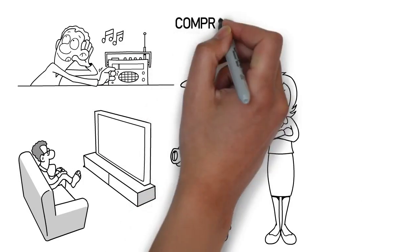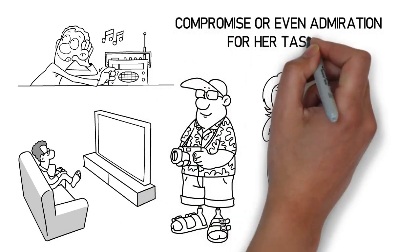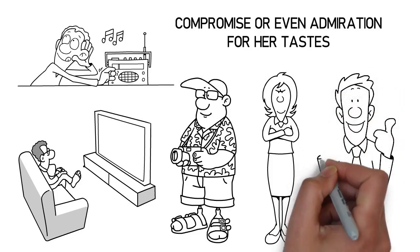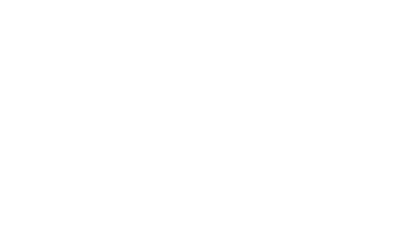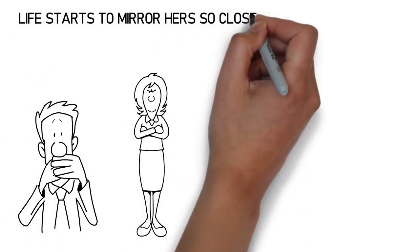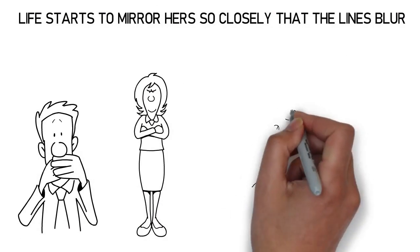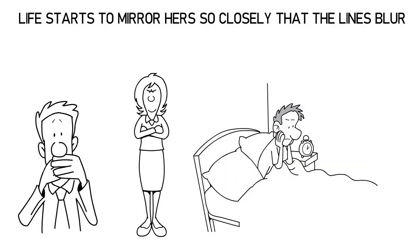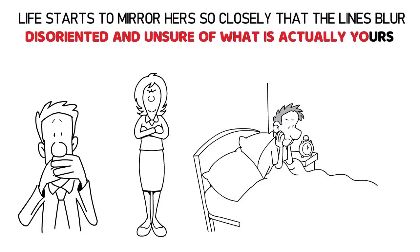At first, it might seem like a compromise or even admiration for her tastes, but over time, this blending shifts into a complete overshadowing of your personality. Your voice becomes quieter, your choices become hers, and your life starts to mirror hers so closely that the lines blur. The realization that you've lost touch with your identity can feel like waking from a dream, disoriented, and unsure of what is actually yours.